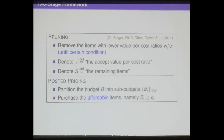In the rest of the talk, I will give the high-level ideas behind our mechanism. We propose a two-stage mechanism design framework. The first stage is called pruning and the second stage is called posted pricing. The idea behind pruning was also used in Singer's paper and the 2011 paper, but in our paper we choose the stop condition more carefully.